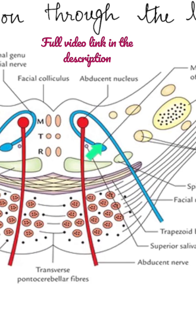The motor nucleus of the facial nerve lies ventrolateral to the abducens nerve nucleus.